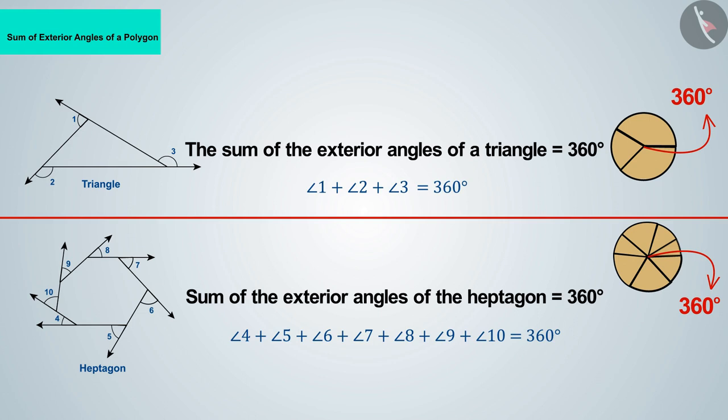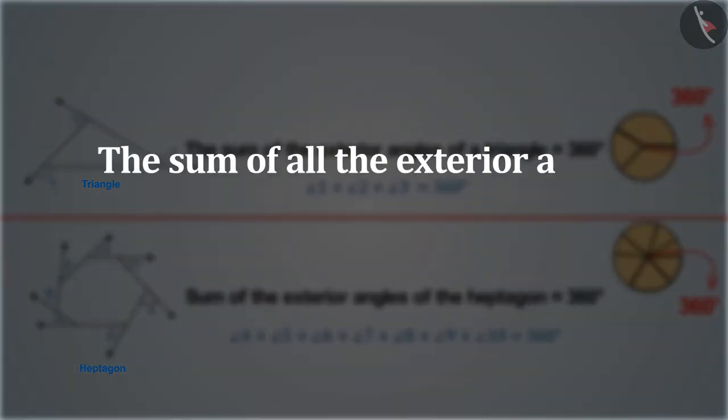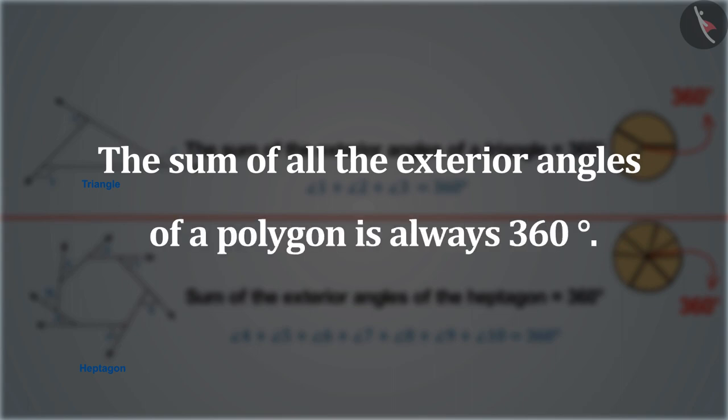Consequently, we can say that the sum of all the exterior angles of a polygon is always 360 degrees.